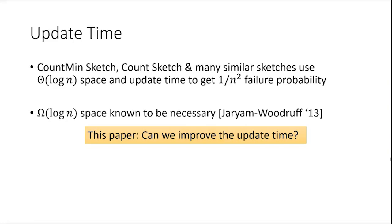Is it easy to improve update time if given more space? Definitely if you use a lot more space — if you just store the entire vector you can save time. But with polylog space I'm not sure how to do it. Is it easy to do amortized? No. This will also be the first result that improves amortized update time.